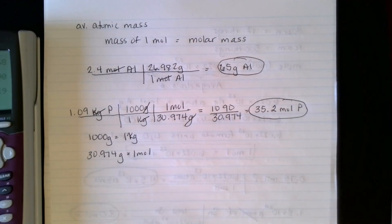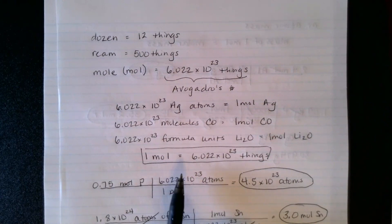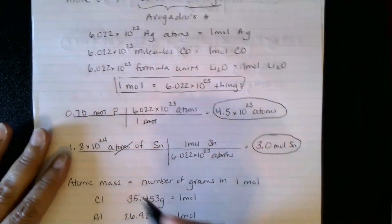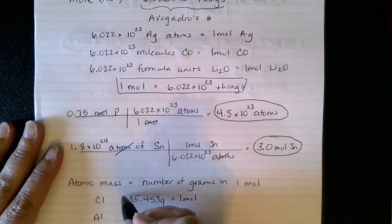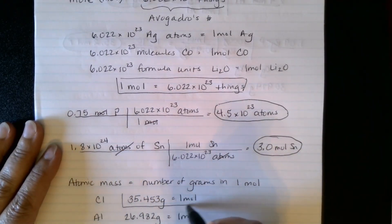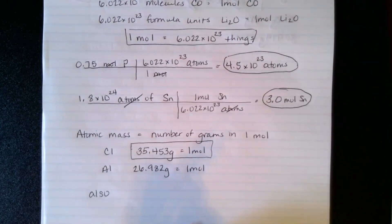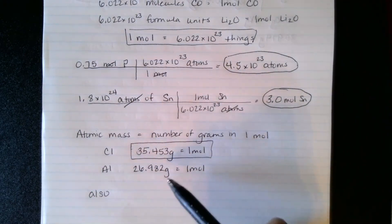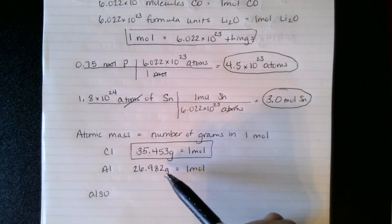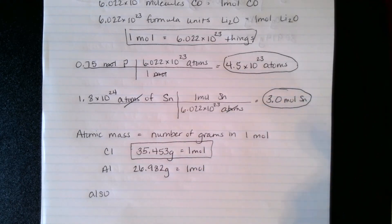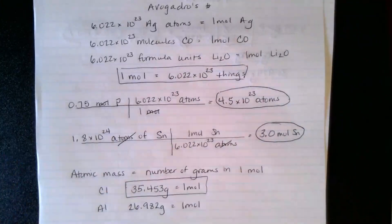So we learned two conversion factors today. The first is that one mole equals 6.022 times 10 to the 23rd things. The other is the molar mass — that number off the periodic table — which tells you how many grams are in one mole for each element, equal to its atomic weight. And that's the end of Chapter 3.